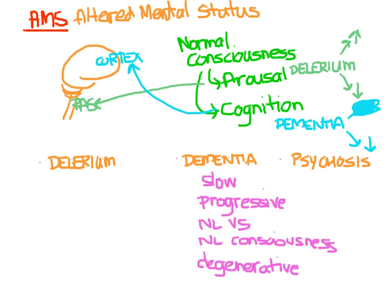Delirium is really more of a medical emergency. The demented patient has been getting worse slowly over time, but the delirious patient — this usually happens fast. They can have derangements of both their arousal as well as their thought content. They may have abnormal vital signs or various levels of consciousness, and the cause is usually something reversible, meaning we better do something about it and fix it.